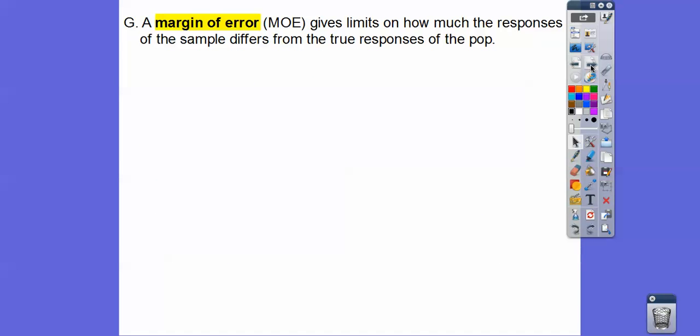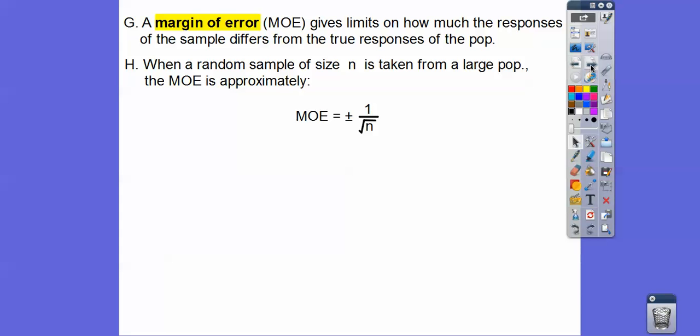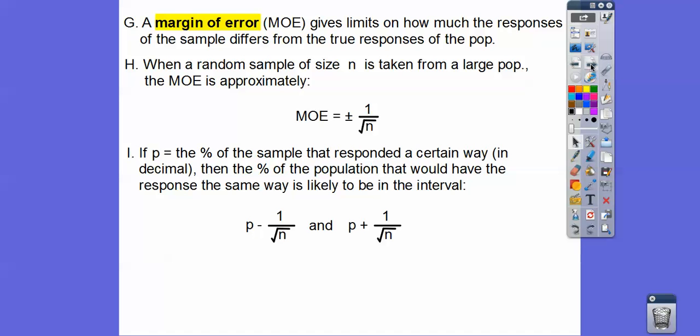A margin of error, and I'm going to call it MOE, gives limits on how much the responses of the sample differs from the true response of the population. Whether it's the whole United States or the whole population of your student body at your school, but you can't interview everybody at your school, so what you do is you get a sample. Your sample is not going to be exactly what your whole school would be. There's going to be a margin of error, and this is how you calculate your margin of error.